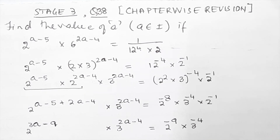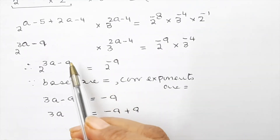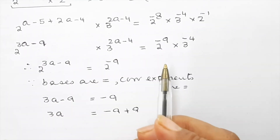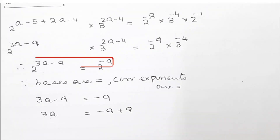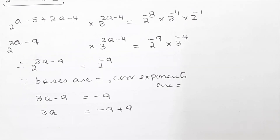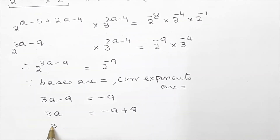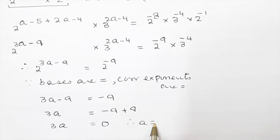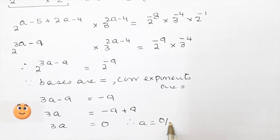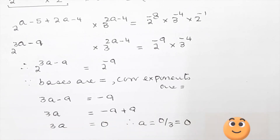Now we see that 2 to the power something into 3 to the power something equals 2 to the power minus 9 into 3 to the power minus 4. Since the bases are equal, the corresponding exponents are equal. So 3a minus 9 equals minus 9, giving us 3a equals minus 9 plus 9, therefore 3a equals 0, and a equals 0 upon 3, which is 0.